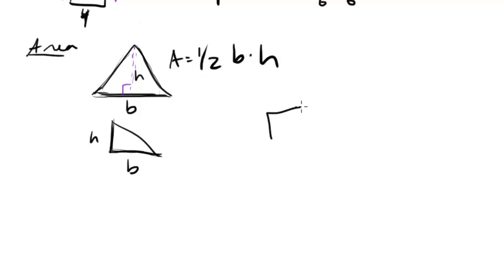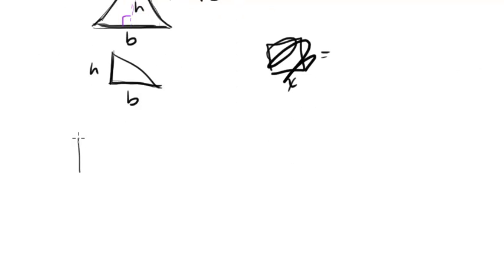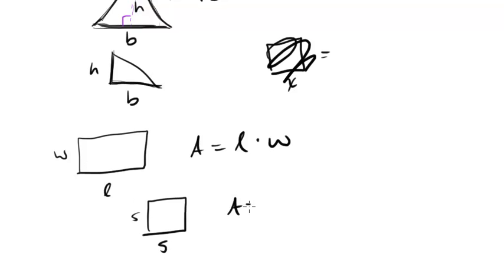How about quadrilaterals, like squares? Let's do rectangle first, actually. Here's a rectangle with a length and a width. The area of this is just length times width. Pretty easy. If it's a square, length and width are the same, so we can just call it side. This is just going to be length times width or side squared.